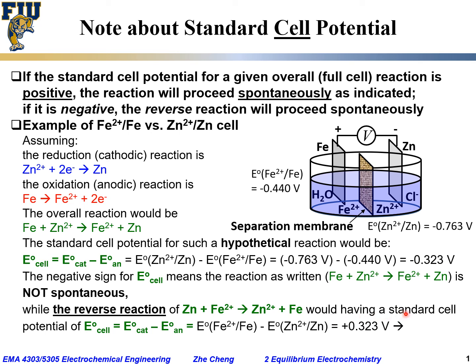would have a standard cell potential of E°cathode minus E°anode, which would be for the iron electrode minus the zinc electrode, and it would be positive 0.323 volt.